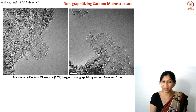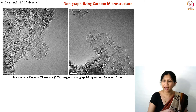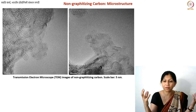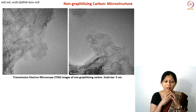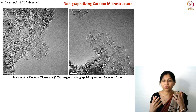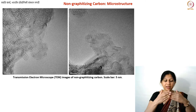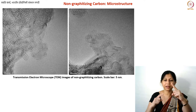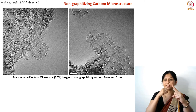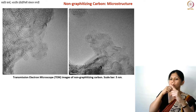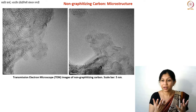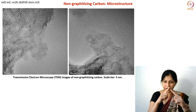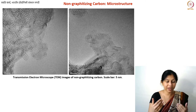In non-graphitizing carbons, what you see in these images is a lot of curved carbon structures — some very large, some very small, some stacked on top of each other, some not. Sometimes you cannot tell what is what, because TEM images are a 2D projection of a 3D material. If I have one plane oriented one way and another plane oriented differently, the 2D projection will show them crossing, like a cross.